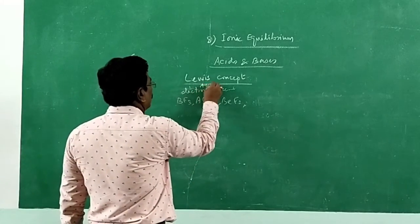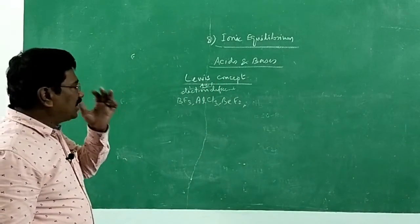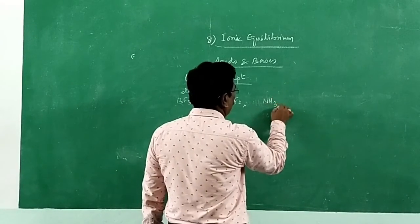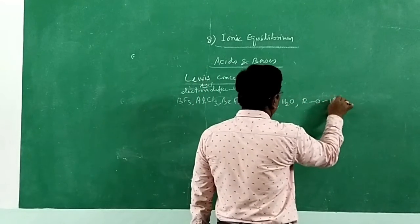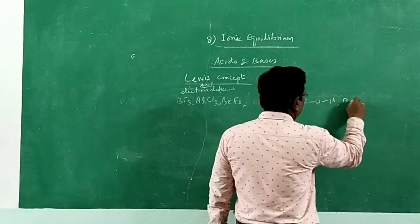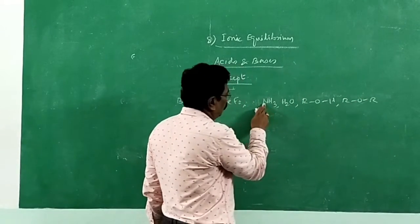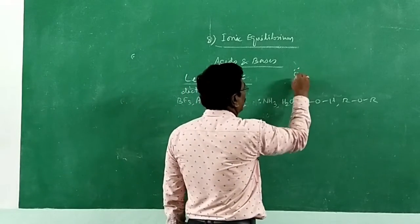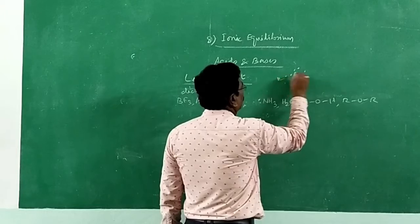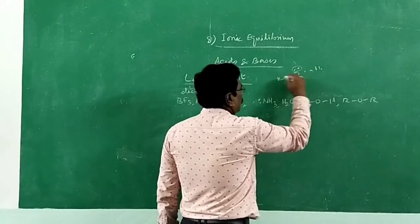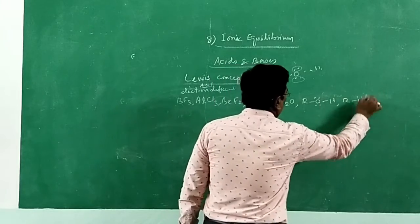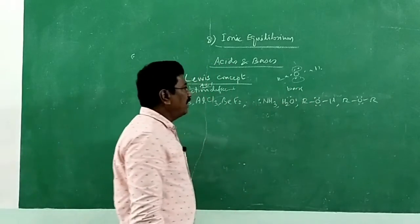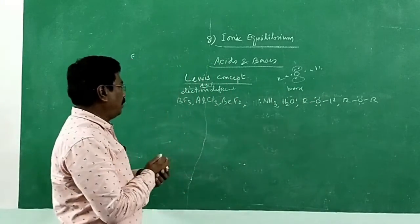Molecules which have lone pair of electrons can act as Lewis bases. For example: ammonia has one lone pair of electron; water has two electron pairs — oxygen in the outermost energy level has six electrons, bonding with two hydrogen atoms leaves two lone pairs; alcohol also has two electron pairs; ether also has two electron pairs. Those molecules which have lone pair of electrons can donate electron pair for the formation of a coordination bond and therefore act as Lewis bases.